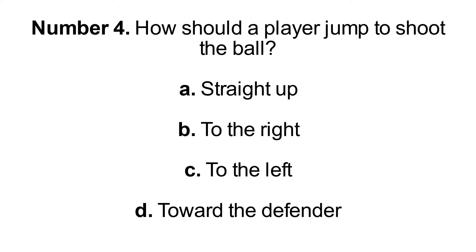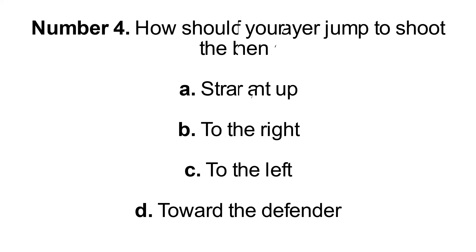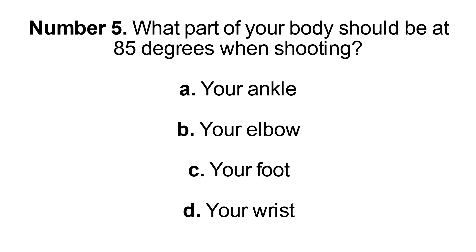Number 4: How should a player jump to shoot the ball? A. Straight up, B. To the right, C. To the left, D. Toward the defender. Number 5: What part of your body should be at 85 degrees when shooting? A. Your ankle, B. Your elbow, C. Your foot, D. Your wrist.